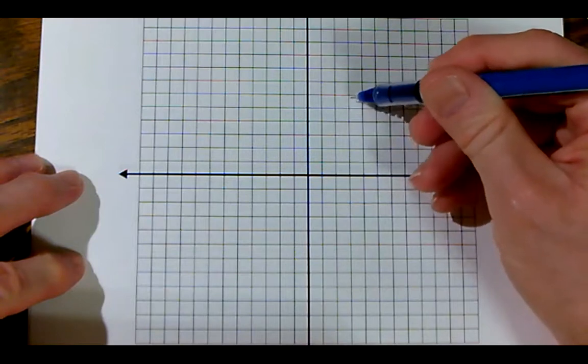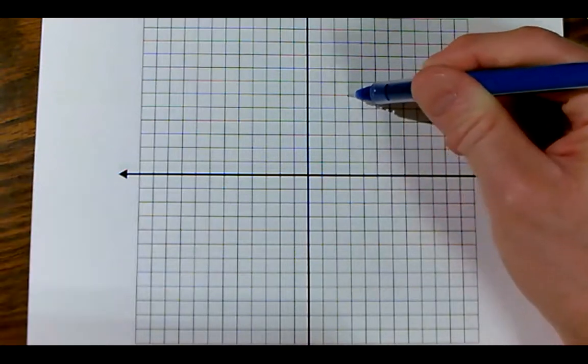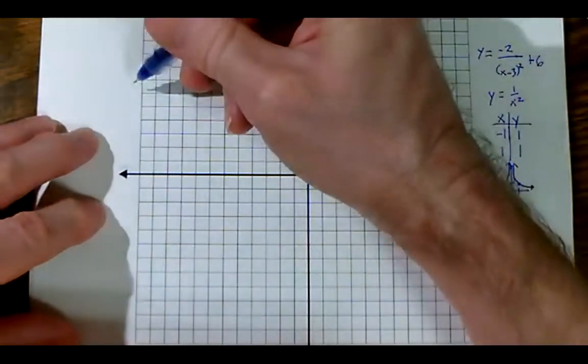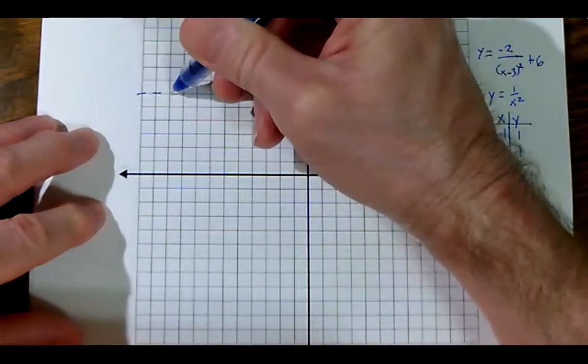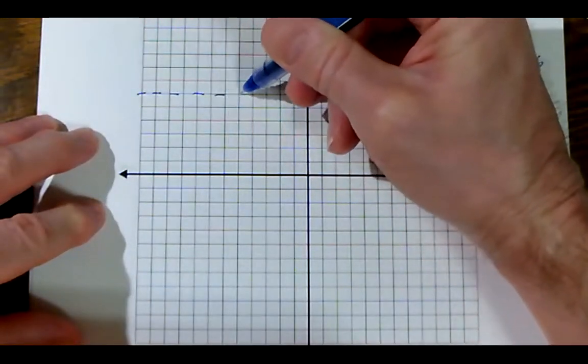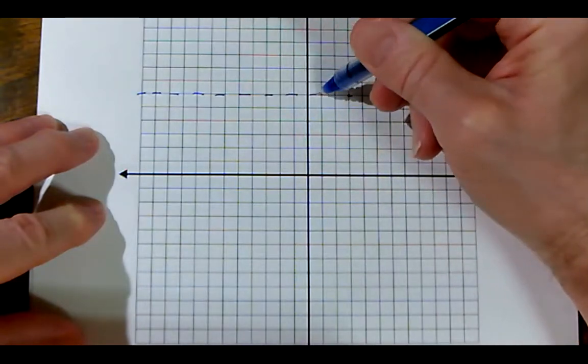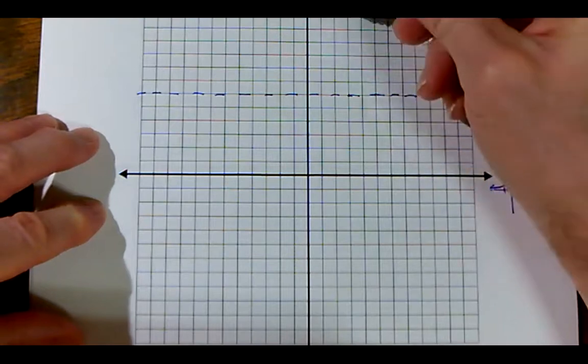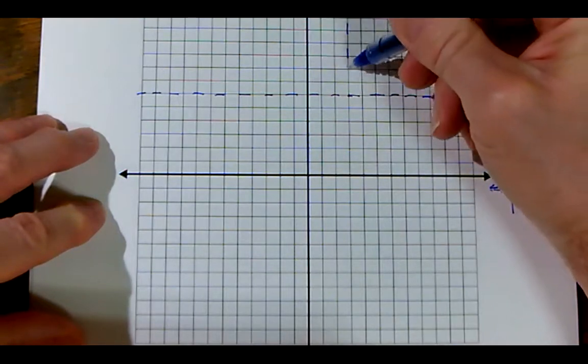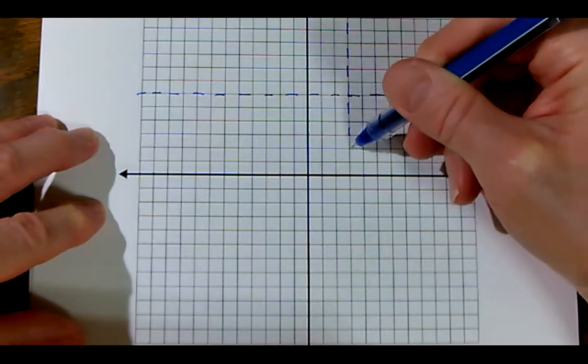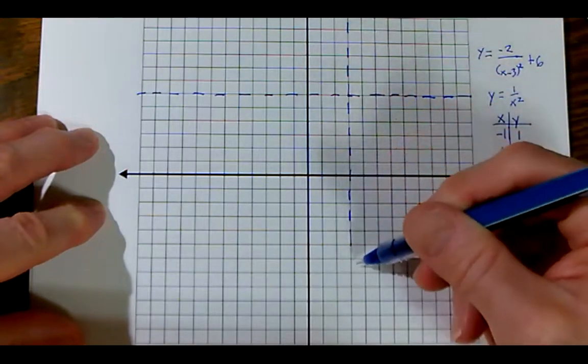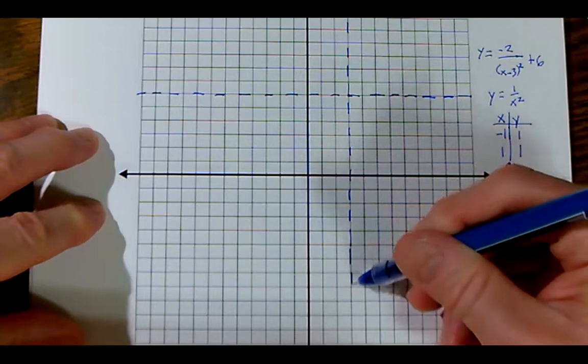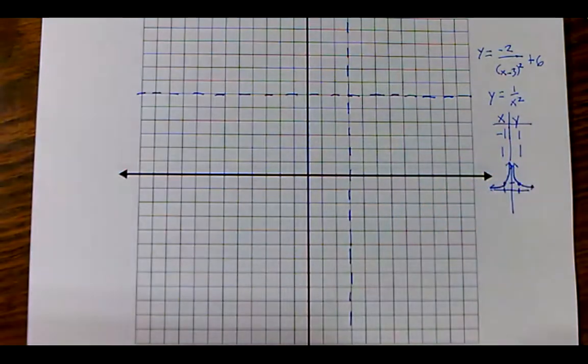So right three up six. One, two, three, four, five, six. The new origin ends up right there which means the entire asymptote structure going through that origin shifts the same way. So I would go like this and like this. Like that. Just kind of continue this on for a while until I get bored. Okay those are my new asymptotes.